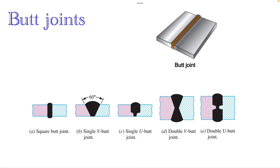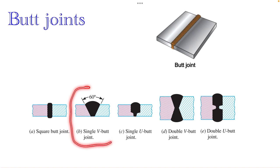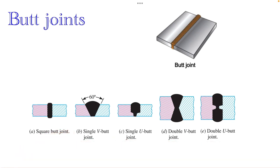Here you can see the different types of butt joint based on the geometry of the weld provided. This is simply the classification of butt joints based on the cross-section geometry of the weld. We will focus on the design analysis of this type at the end.